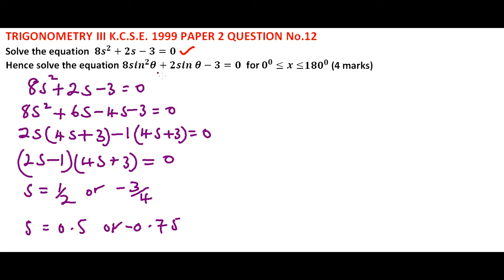So we are supposed to use these values to solve this equation and therefore we are not going to factorize the second equation. We just say, if 8sin²θ + 2sinθ - 3 = 0, if you substitute sinθ with s, then this will be the same equation.